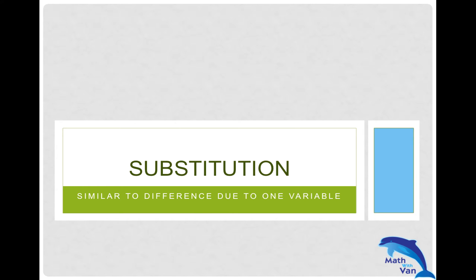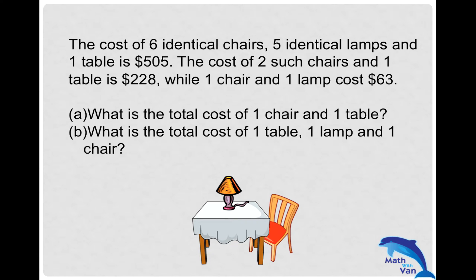Let's look at this question: The cost of six identical chairs, five identical lamps, and one table is $505. The cost of two such chairs and one table is $228, while one chair and one lamp cost $63. Part (a): What is the total cost of one chair and one table? Part (b): What is the total cost of one table, one lamp, and one chair?